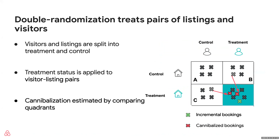A third approach we're exploring at Airbnb is double randomization, where you break both supply and demand into treatment and control. The treatment is only applied when both are in the treatment bucket. You can then estimate cannibalization by comparing quadrants — for example, comparing quadrant B to quadrant A: you're looking at control listings, but some guests on the treatment side are being stolen from treated listings. That is pure cannibalization, giving you an estimate of listing-side cannibalization.